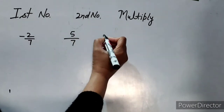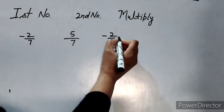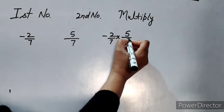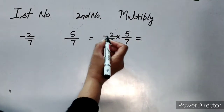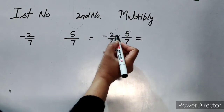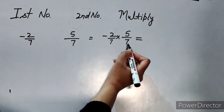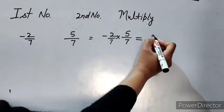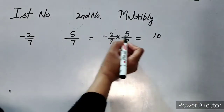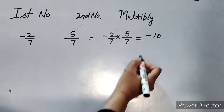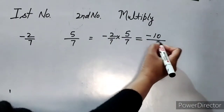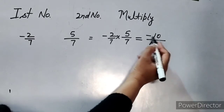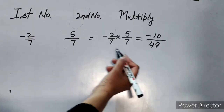Minus 2 over 7 multiplied by 5 over 7. Numerator multiplied by numerator and denominator multiplied by denominator: 2 multiplied by 5 gives 10, and there is a minus sign so we put minus before 10. 7 multiplied by 7 gives 49. So the answer is minus 10 over 49.